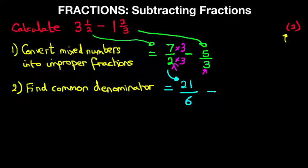And now let's work on the second fraction. We have 5/3. Now the denominator is 3. In order for this to equal 6, we have to multiply it by 2. And if we are multiplying the denominator by 2, we have to multiply the numerator by 2. This becomes 5 times 2 is 10, 3 times 2 is 6. So we have rewritten the question as 21 over 6 minus 10 over 6.